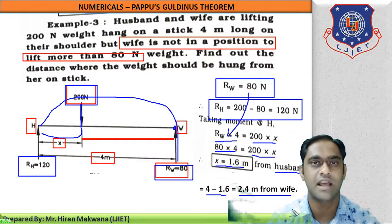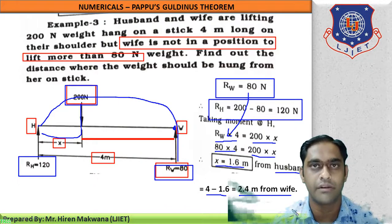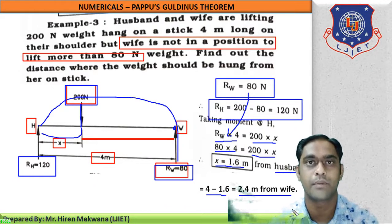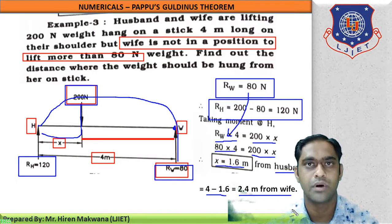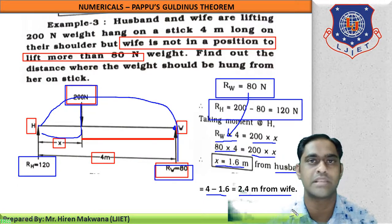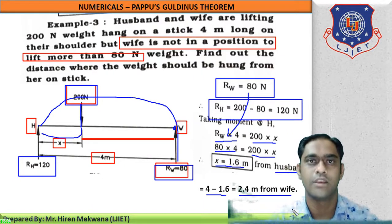These types of numericals are simple problems in which only steps one, three, and four are performed. In the next lecture, we will see examples where all five steps are required — including horizontal and inclined forces. Thank you very much, goodbye students.